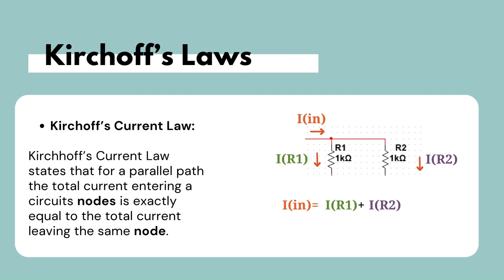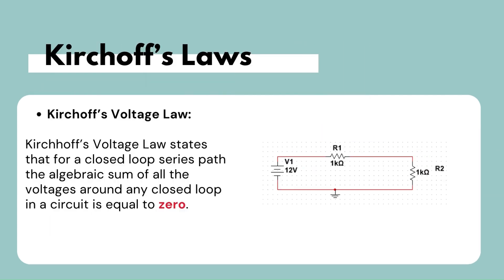Kirchhoff's current law states that for a parallel path, the total of currents entering a circuit's node is exactly equal to the current leaving the same node. This is because current has no other place to go, therefore no charge is lost. As for Kirchhoff's voltage law — the second fundamental law — which is an application of the conservation of energy, it states that for a closed loop series path, the algebraic sum of all voltages around a closed loop in a circuit is equal to zero, because a circuit loop is a closed conducting path so no energy is lost.